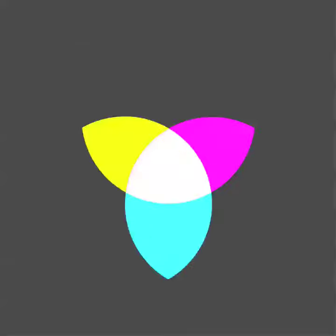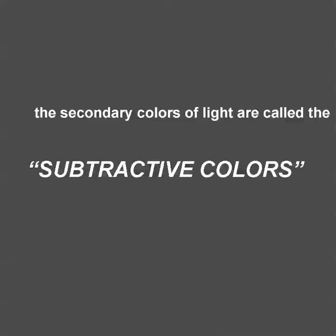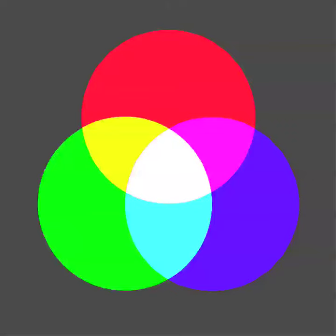Those are our secondary colors. The secondary colors of light are called subtractive colors, and these have names too. That's yellow — and where green and blue mix we call that color cyan, and where red and blue mix we call that magenta.